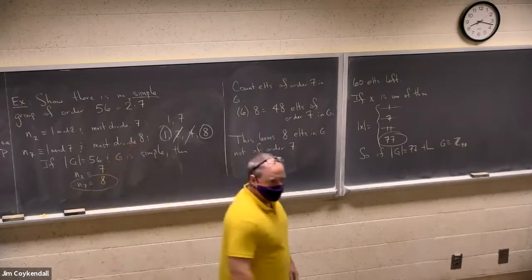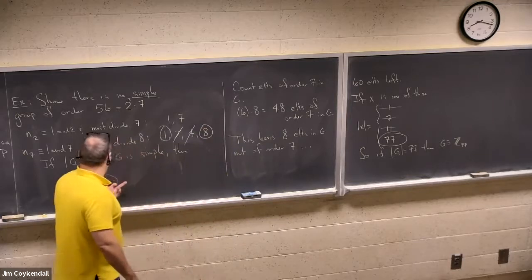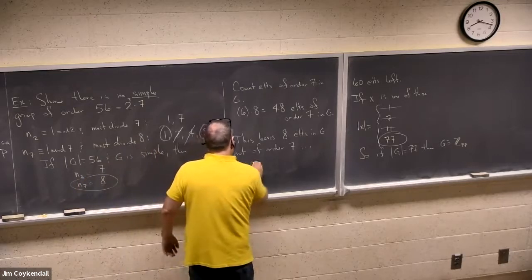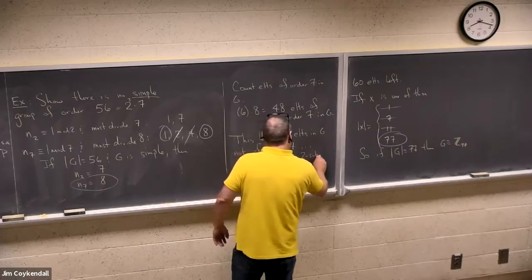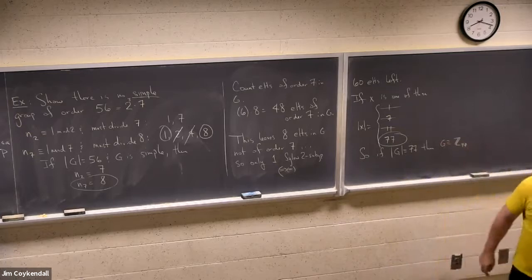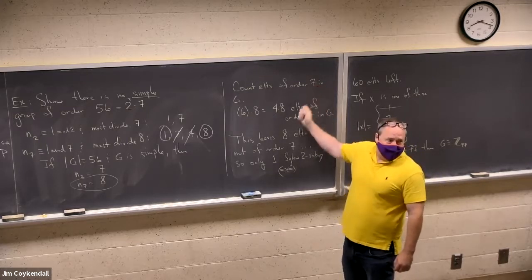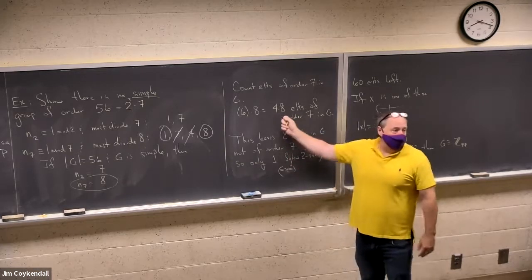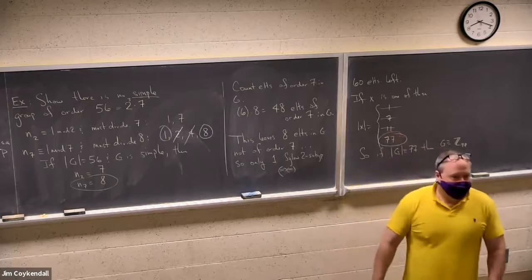So everybody with me? We've got 48 elements of order 7 in G. And so what does that mean? There's only room in G for one Sylow 2 subgroup because it's got eight elements. So there is no simple group of order 56 because you're forced into having eight Sylow 7 subgroups, and that only leaves you room enough for one Sylow 2 subgroup. In fact, it's normal. What you'll have in such a group: you will have 48 elements of order 7, and then whatever's left over is the Sylow 2 subgroup.